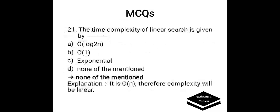The time complexity of linear search is given by options: a) O(log n), b) O(1), c) exponential, or d) none of the mentioned. Correct answer is none of the mentioned, because the time complexity of linear search is O(n) — that is the worst case.